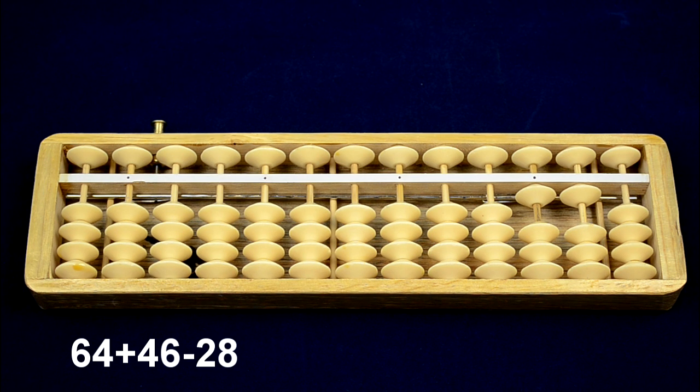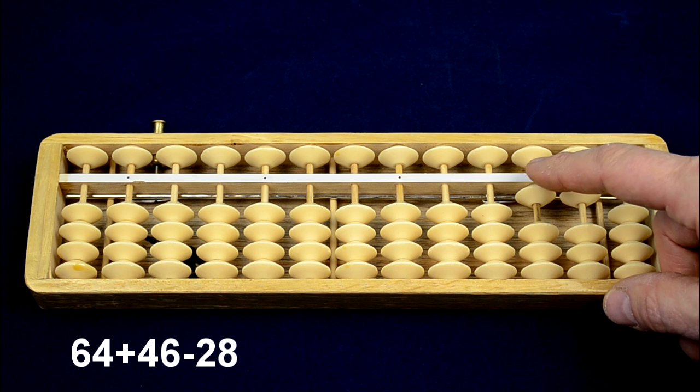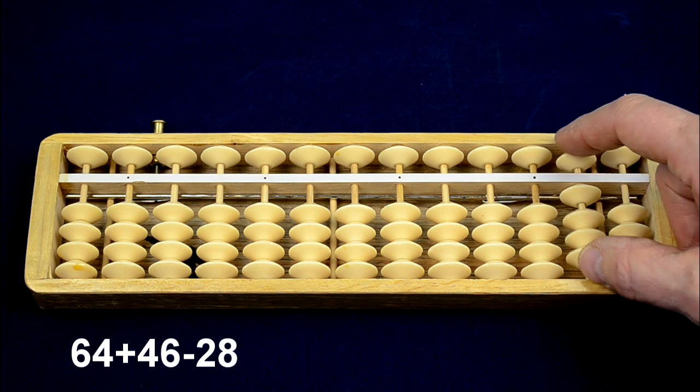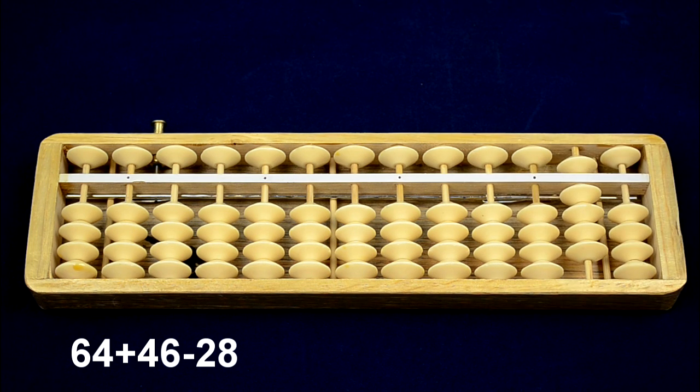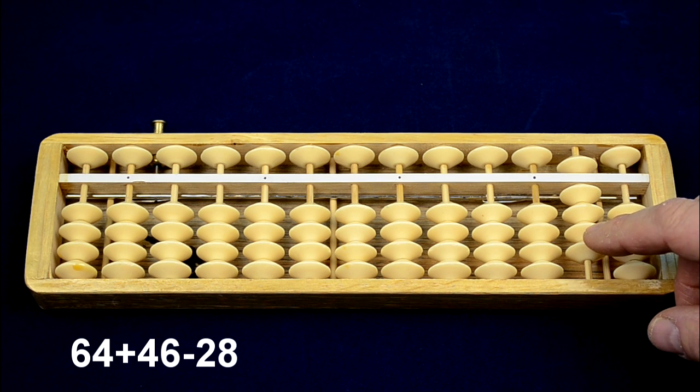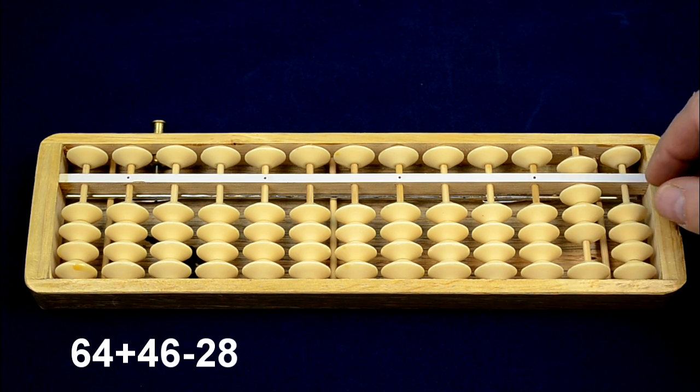Minus 28. I want to take away 2 tens, but I don't have that, so I take away 100 and put in 80. And then I want to take away 8, so I take away 10 and put in 2.